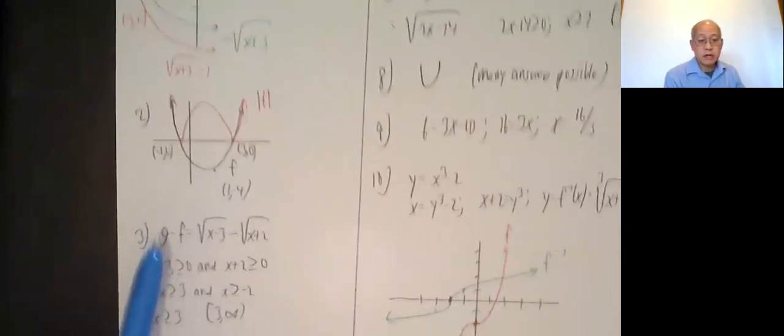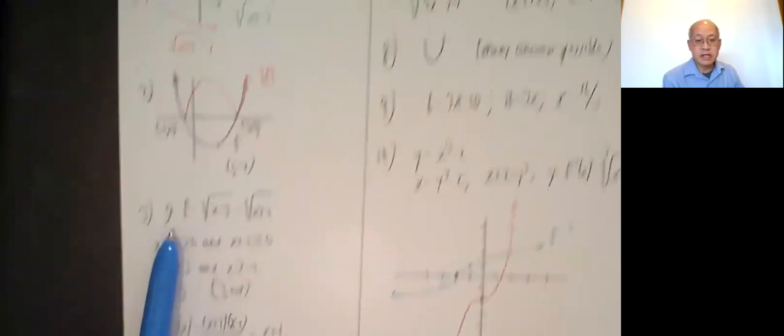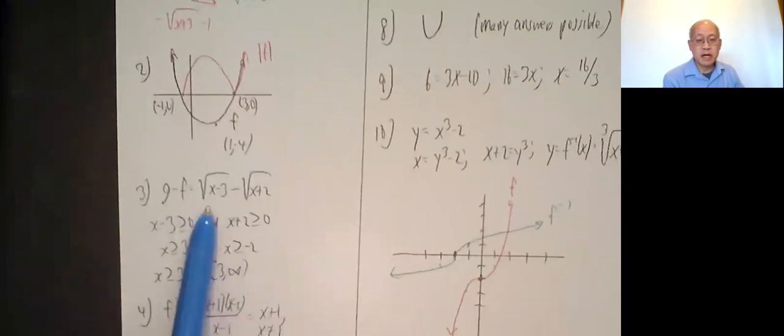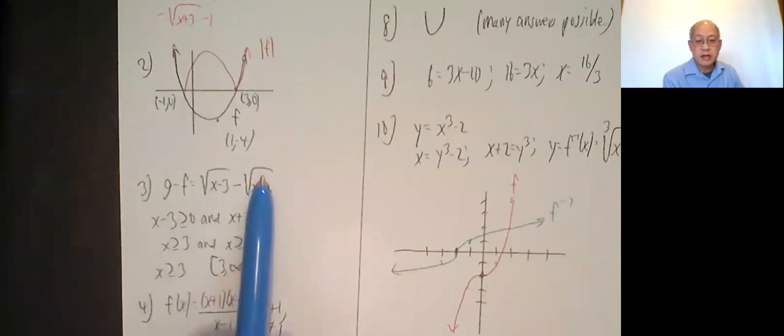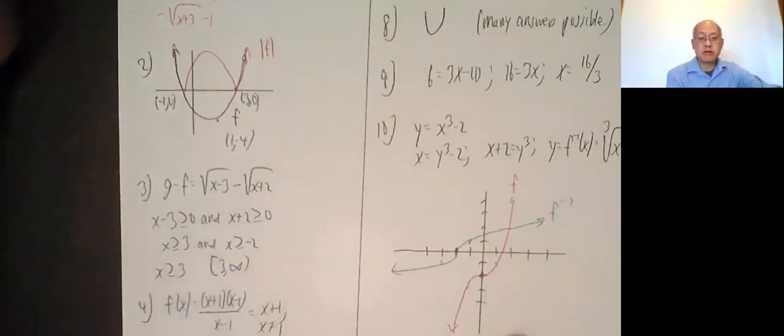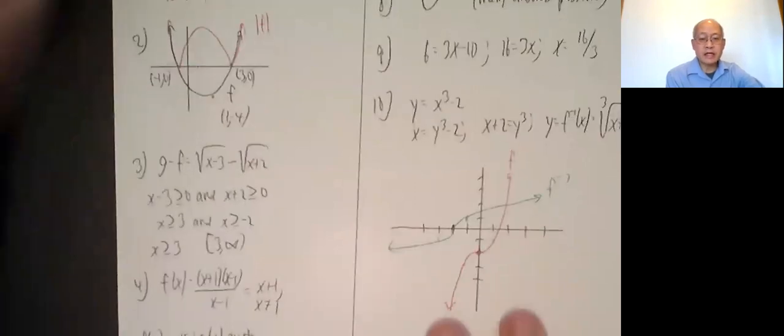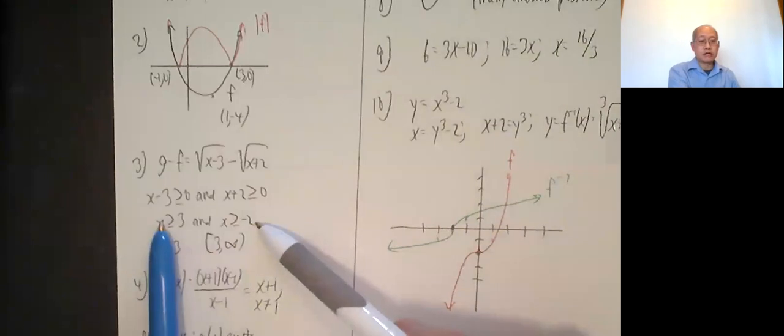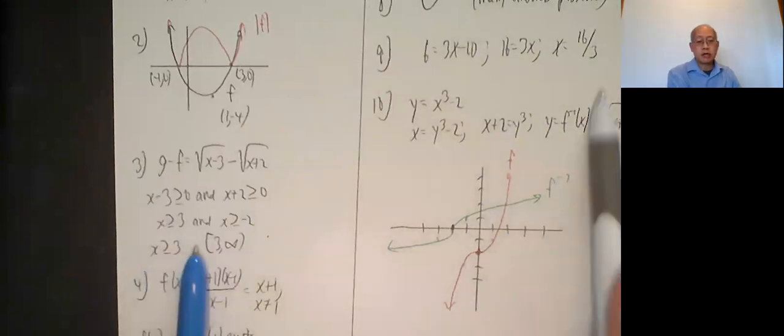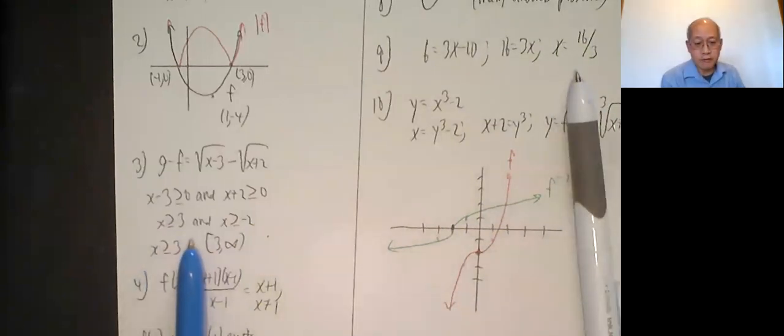Number 3, find the domain of g minus f. So here's g minus f. This thing has to be greater than or equal to 0, and this thing has to be greater than or equal to 0. So x is greater than or equal to 3 and x is greater than or equal to negative 2. Both of these combine into just x is greater than or equal to 3. So the domain is bracket 3, infinity.